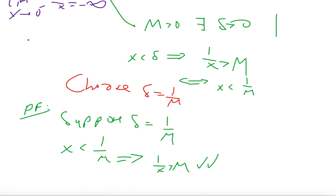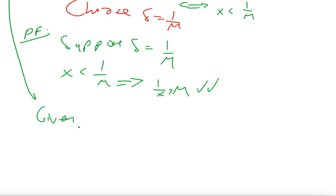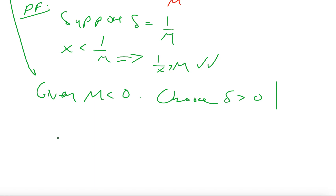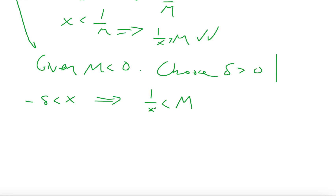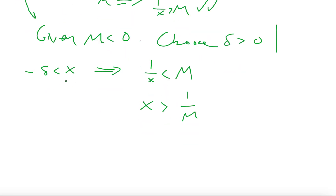How about the other side — zero from the negative? That means we have negative infinity, so M is less than zero, a negative value. We choose a positive delta such that — for the left-hand side — negative delta less than x implies that 1/x is going to be less than M. We want it to be even more negative, so even smaller. That's the same as saying x is going to be greater than 1/M, because we flip the inverse. And if x is greater than 1/M and x is greater than negative delta, then if we choose negative delta equal to 1/M — you might be confused at first, but it makes sense because M is already a negative value, so the negatives cancel out and delta becomes positive.